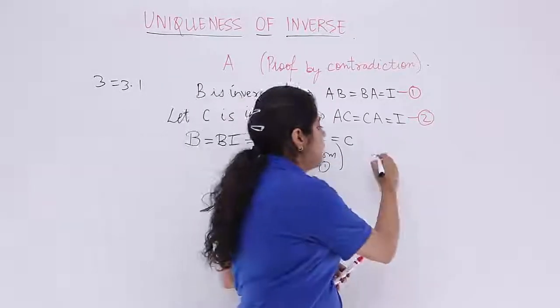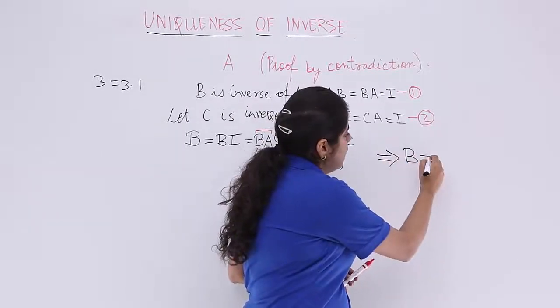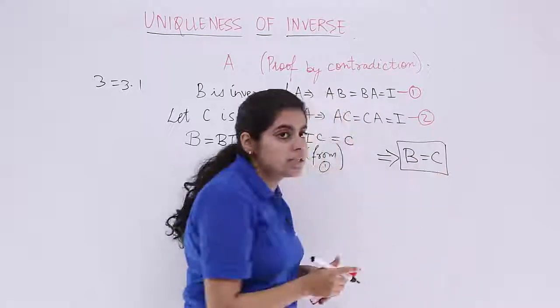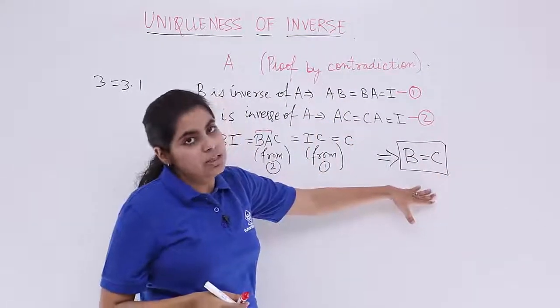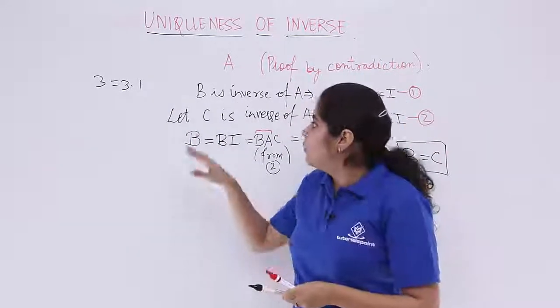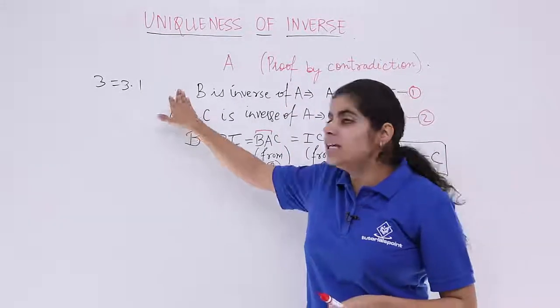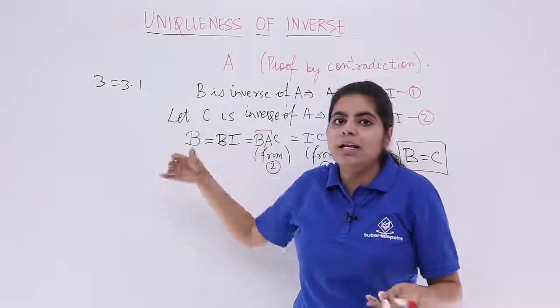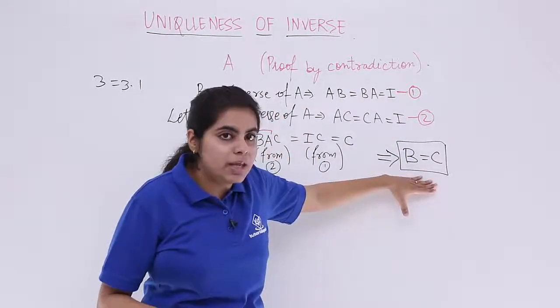So that means by everything we have shown here, B is equal to C. When B is equal to C, these statements which we assumed earlier are incorrect because B and C are one and the same thing. So only one inverse would exist, and that is B, the inverse of A.